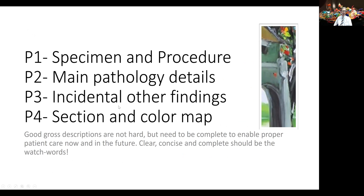To summarize: paragraph one is the specimen and the procedure. Paragraph two focuses on the main pathology — the specifics and details, locations, relationships that are going to be important in staging and providing therapy for this patient. Paragraph three covers the incidental or other findings. And paragraph four is the section and color map that makes the slides a key part of this process. Gross descriptions are not complicated, but we need to approach them in a systematic and repeatable manner so that we are enabled to make them complete, because that's what's important to proper patient care now and in the future. Developing clear, concise, and complete language should be our goal and the watchword for our gross descriptions.